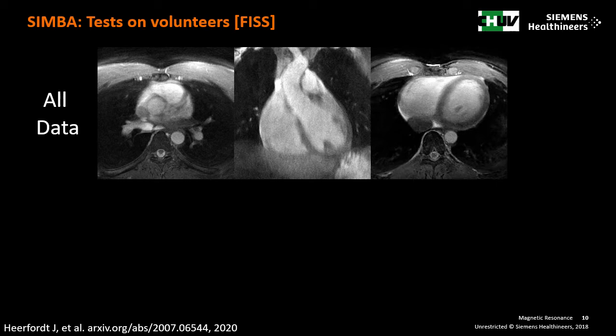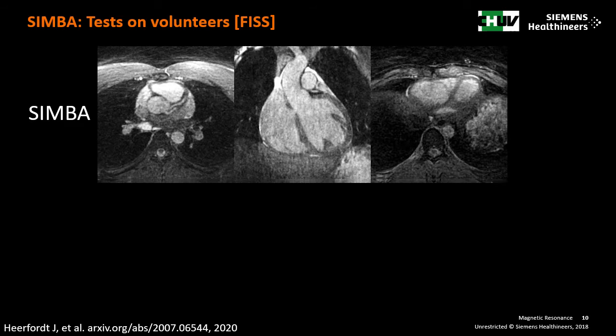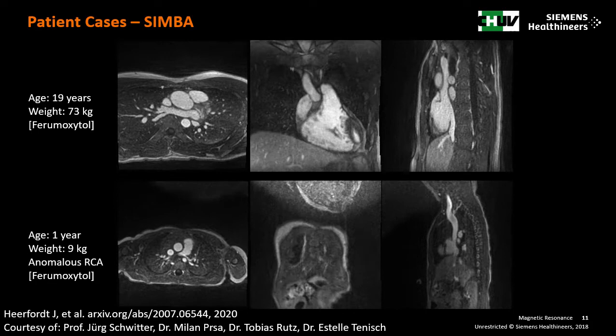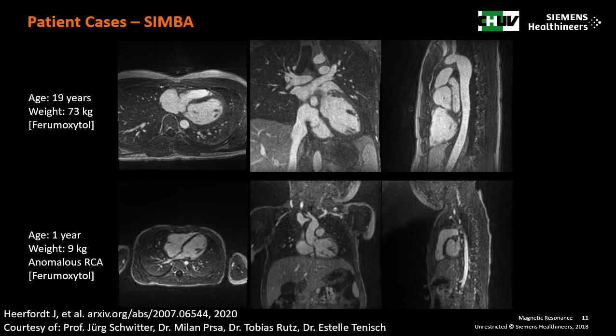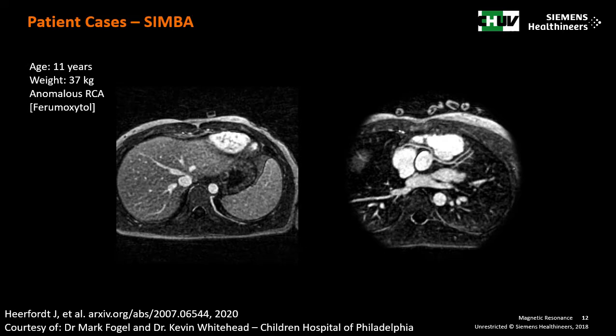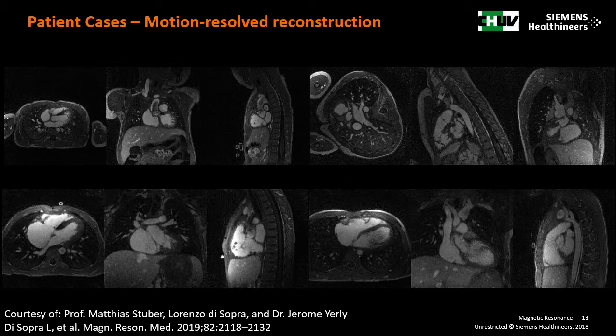This is an example on a volunteer acquired with a fast interrupted steady state. You can see how all the data together produces a very blurred, motion-degraded image, whereas the SIMBA cluster makes the coronaries visible — though the dataset is noisier because it uses less data. Here it's shown side by side. Two main studies are running on patients with ferrumoxytol: one at the University Hospital in Lausanne and the other at the Children's Hospital in Philadelphia. Here you can see two subjects — a 19-year-old and a one-year-old — with an anomalous RCA. This data from Philadelphia shows an 11-year-old patient where you can clearly see the anomaly of the RCA coming from the wrong coronary cusp.